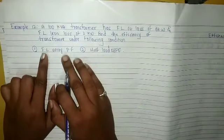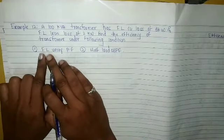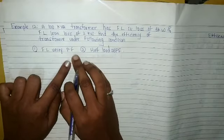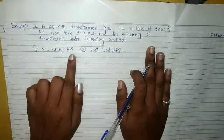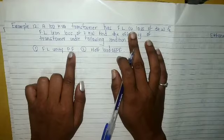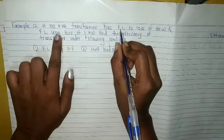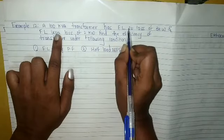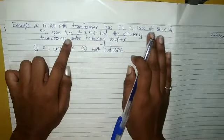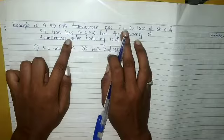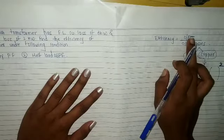The first condition says: full load at unity power factor. We have to calculate efficiency at full load, unity power factor. The losses given — copper loss and iron loss — are given at full load. So there is no need to calculate copper loss separately. First, we have to find the output.